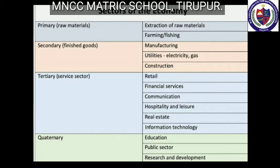Secondary activities transform raw materials into finished goods - for example, iron and steel industry. Tertiary activities do not directly produce goods but support the process of production - for example, transport and communication. Quaternary activities are related to research and development as well as knowledge - for example, services like consultation, education, and banking.